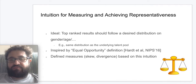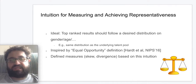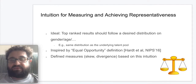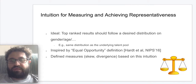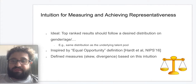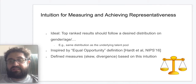Our measurement and mitigation approach for fair ranking assumes that in the ideal setting, the set of qualified candidates and the set of top-ranked results for a search request should both have the same distribution on the attribute of interest. This means the ranked and recommended list should be representative of the qualified list. Such an assumption can be thought of as based on the definition of equal opportunity defined in prior machine learning research. In mathematical terms, a predictor function satisfies equal opportunity with respect to an attribute and true outcome if the predictor and the attribute are independent, conditional on the true outcome being one — in our case meaning a favorable or qualified candidate.